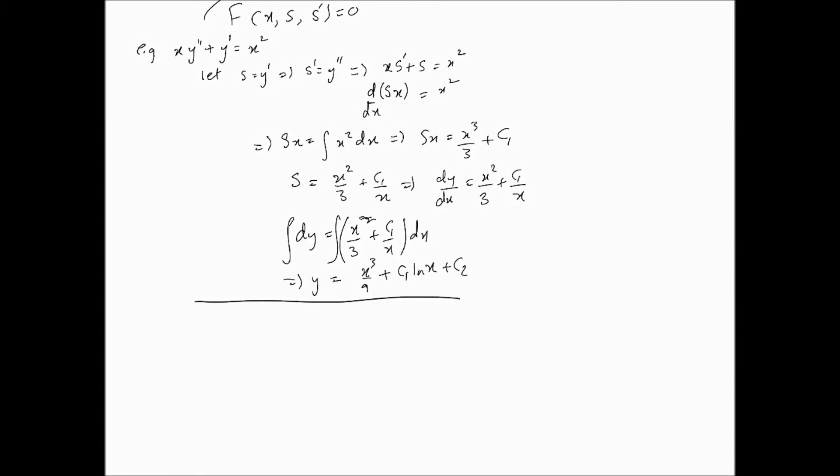Okay, so the type 2 second order differential equation is where x is missing. So basically, you have this situation, and the second order differential equation, the x, the independent variable, is missing. So in this case, what we do is we let, again, s equal y dash, which implies that y double dash is equal to s dash.